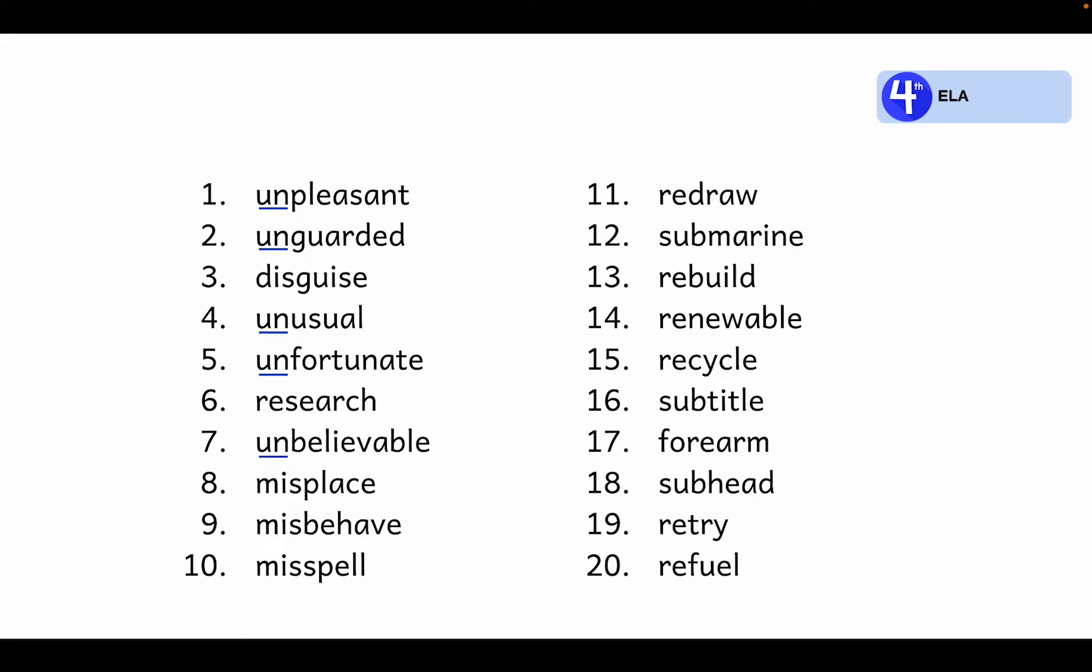The prefix un means not. So when un is added to a base word, it makes the meaning the opposite. Pleasant means something that's nice. Unpleasant is something that is not nice.